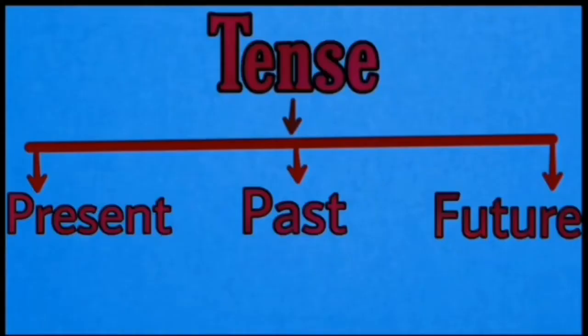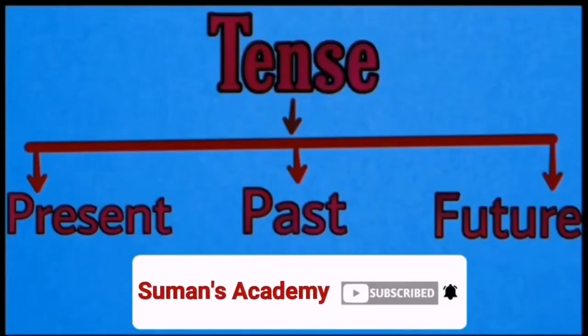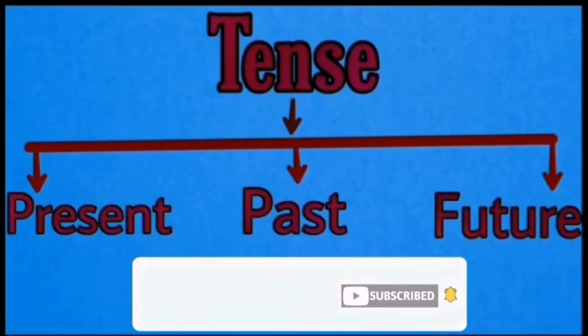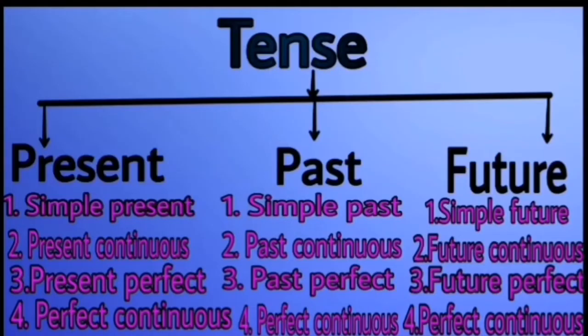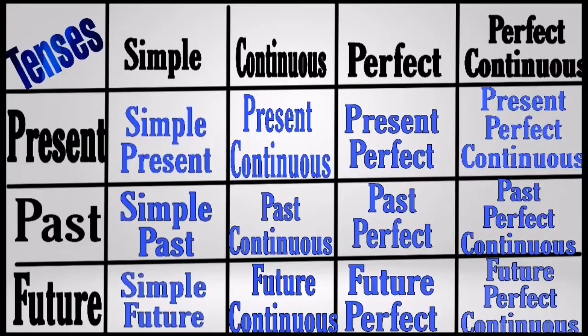Always remember, there are three types of tense: present, past, and future. These tenses are each subdivided into four parts — so present tense has four parts, past tense has four parts, and future tense has four parts. The four subdivisions are: simple, continuous, perfect, and perfect continuous.